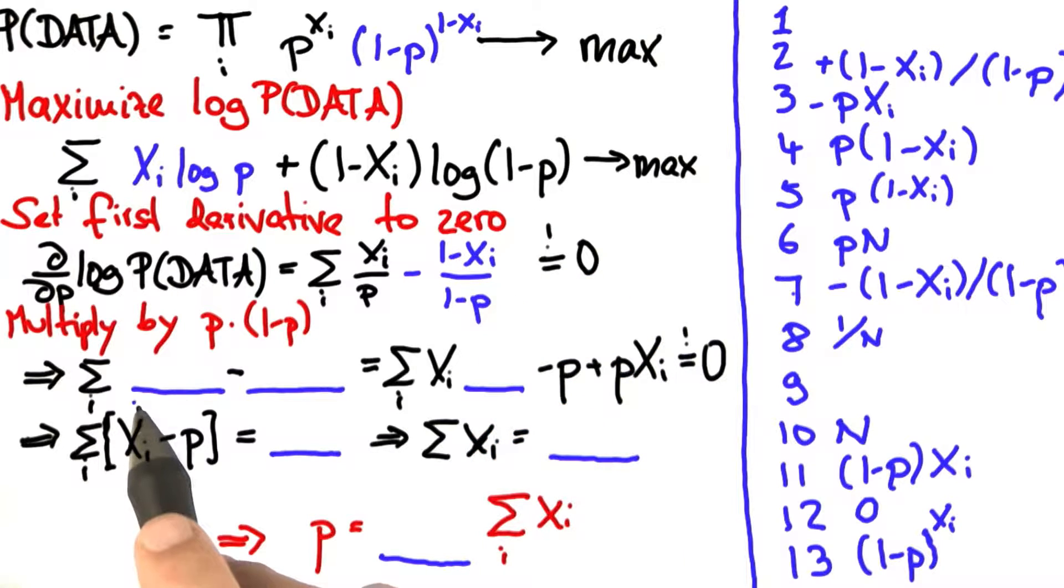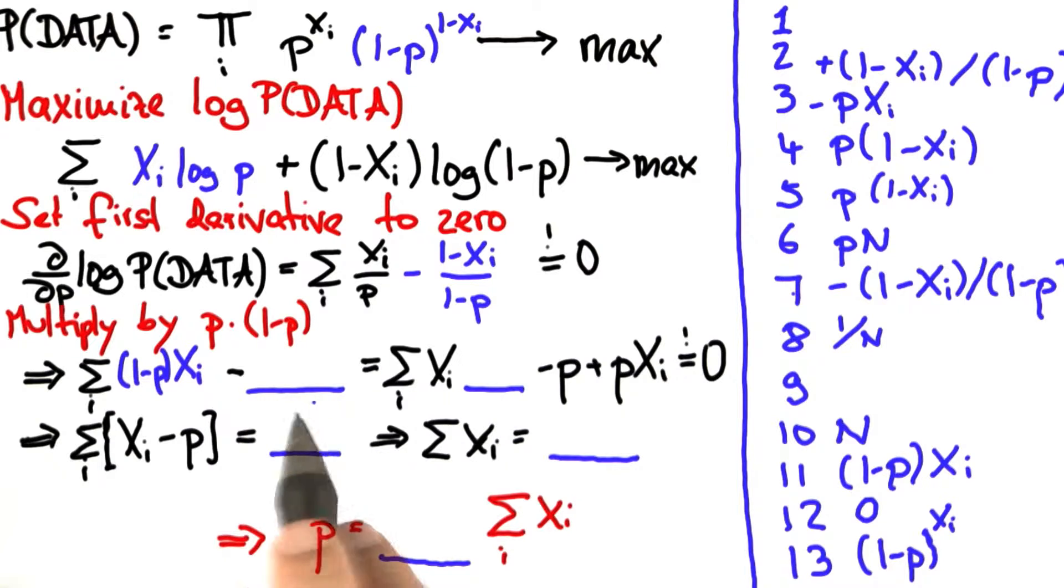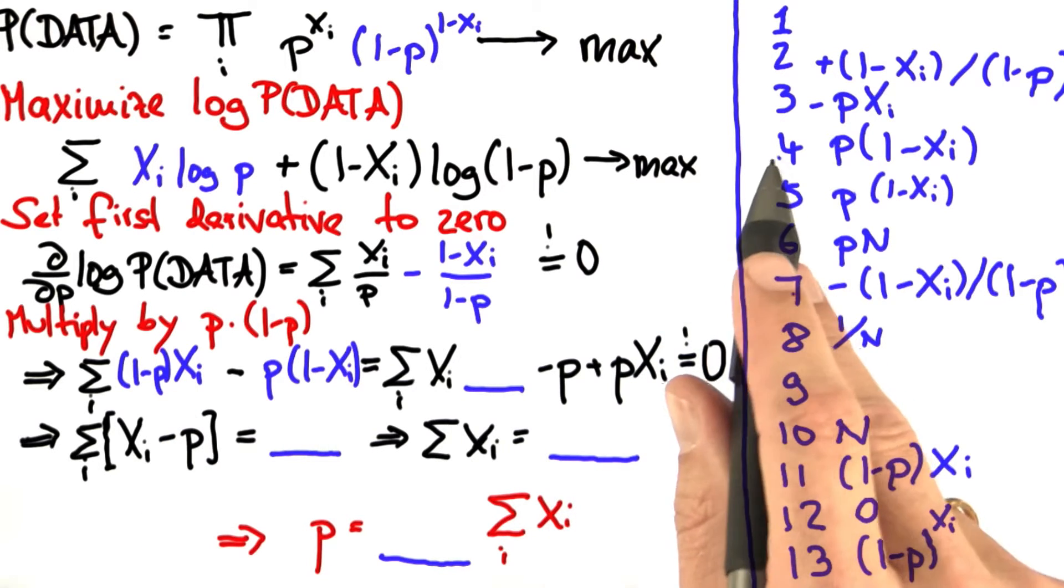That was really non-trivial. This one will be number 11. We're multiplying in p and 1 minus p. The 1 minus p stays. And likewise, this here is number 4. Multiplying this out misses exactly one term, minus p xi, which is number 3.